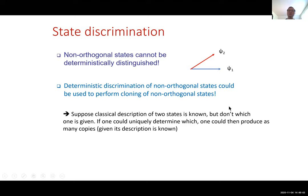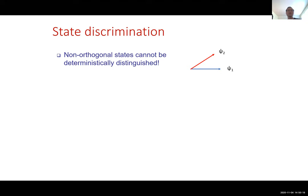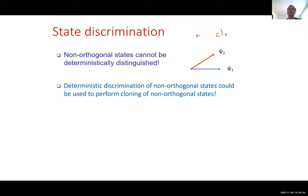The argument is: suppose we're given two non-orthogonal states — we know their description but not which one we have. If you could determine which one it is, then if I know it's |ψ₁⟩ I could produce as many copies as I want because I know the description. If I know it's |ψ₂⟩, I could do the same. So no-cloning and non-orthogonal state discrimination are two sides of the same coin.